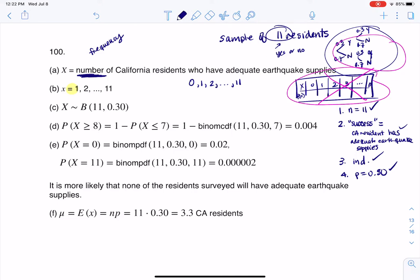It says, what is the probability that at least eight have adequate earthquake supplies? So if I'm thinking about at least eight, I'm going to go ahead and write out my sample space here, at least just the top row so we can do this. So zero, one, two, three, four, five, six, seven, eight, nine, ten, and eleven.